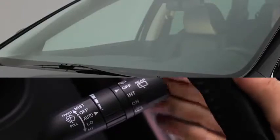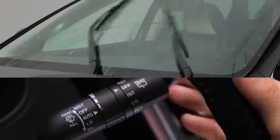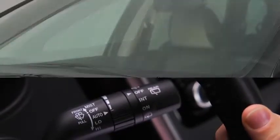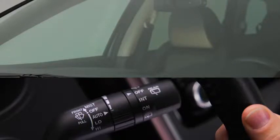To spray washer fluid, pull the lever toward you. For automatic wiping, pull the lever down to auto. When the wiper lever is in the auto position, the rain sensor detects the amount of rainfall on the windshield and turns the wipers on or off automatically.